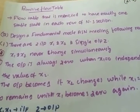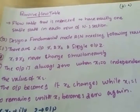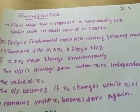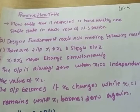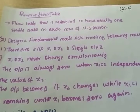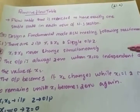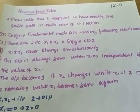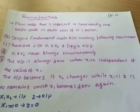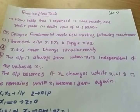With one problem, I will explain all these areas. First is the Primitive Floor Table. A floor table restricted to having exactly one stable state in each row of a necessary section is called a Primitive Floor Table. I will discuss this with the following problem: Design a fundamental mode Asynchronous Sequential Network meeting the following requirements.